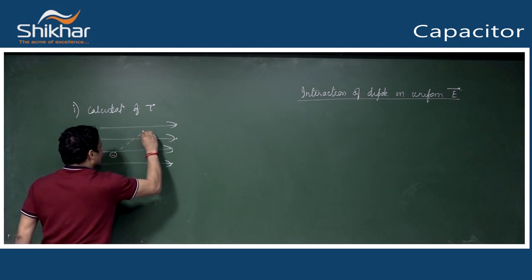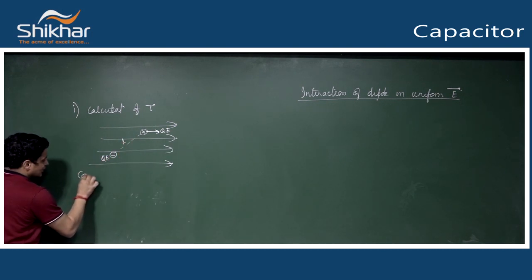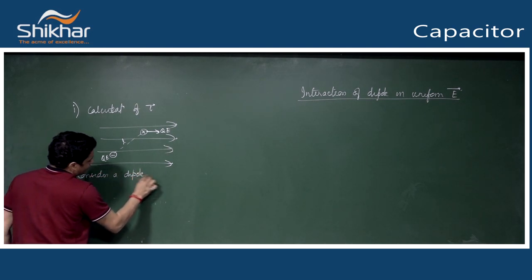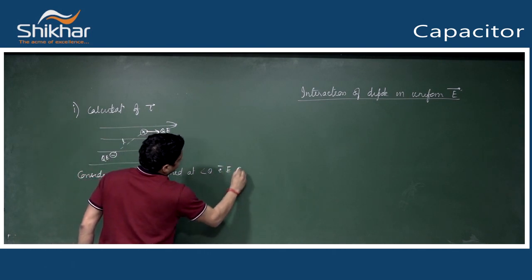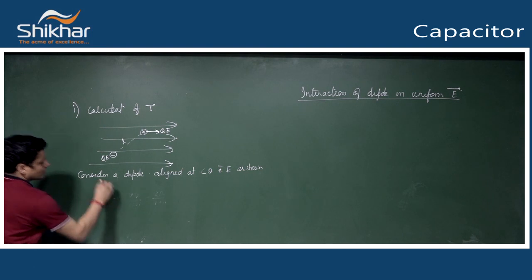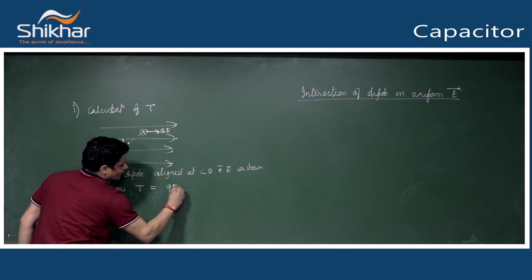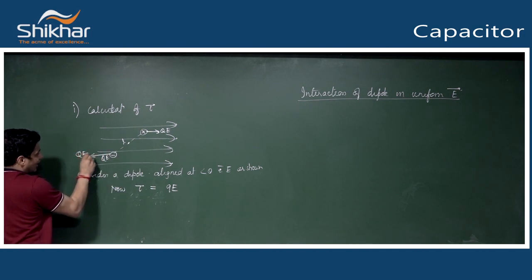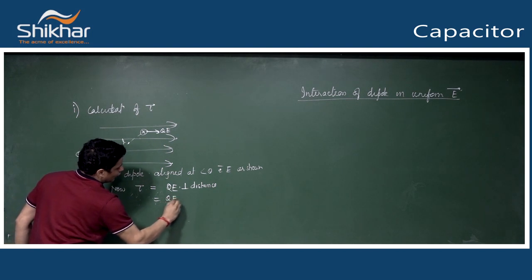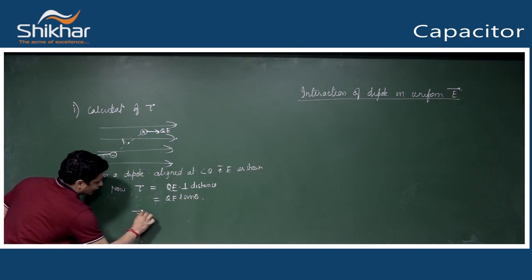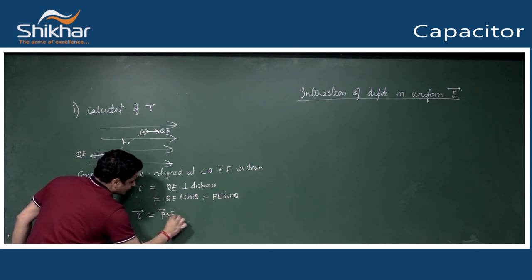We draw the figure with the dipole aligned at angle theta with the electric field as shown. Force qE acts on each charge. Torque about center of mass equals qE into perpendicular distance = qE into l sinθ. This gives torque = qEl sinθ = pE sinθ. Since it is a vector, torque can be written as p cross E.